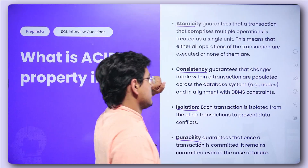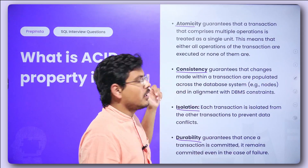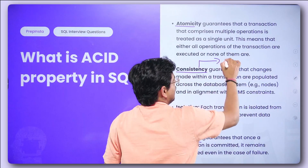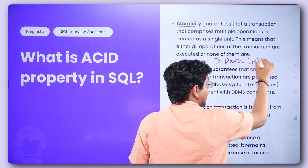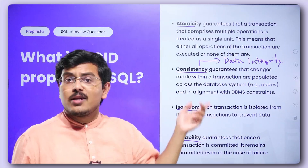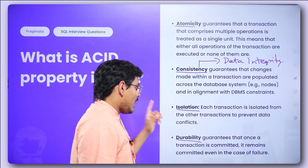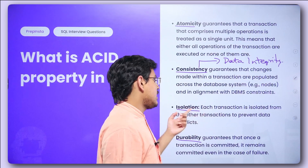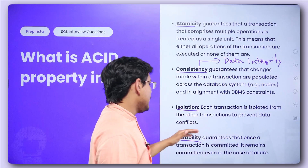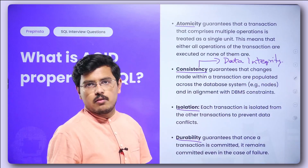Consistency guarantees that changes made within a transaction are propagated across the whole database system. This is often associated with data integrity — mentioning this will earn you extra brownie points in an interview. Isolation means each transaction is isolated from other transactions to prevent data conflicts. Durability guarantees that once a transaction is committed, it remains committed even in the case of failure.